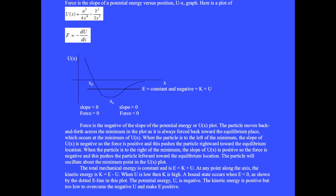Force is the slope of a potential energy versus position plot. The potential energy is U(x). Here is a plot of U(x) equals a squared over 4x to the fourth minus b squared over 3x cubed.